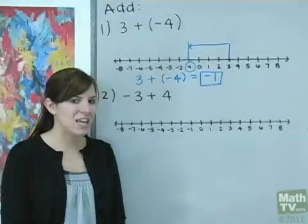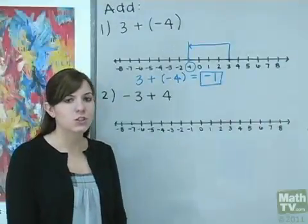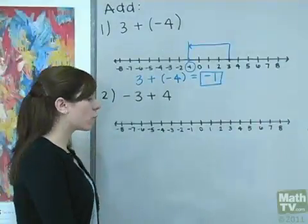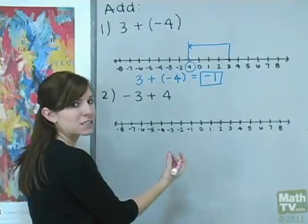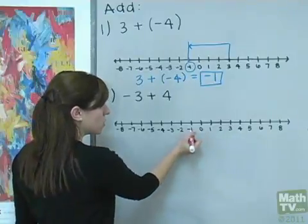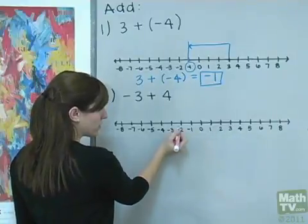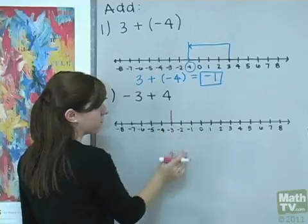We are going to add negative 3 plus 4. To do this, we're going to start at our origin and move over 3 spaces to the left because our 3 is negative. So moving over 3 spaces, we're at negative 3.